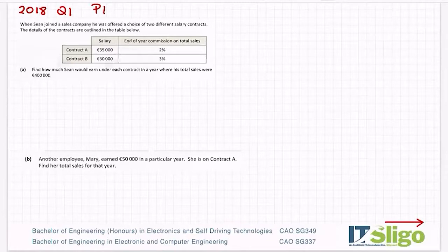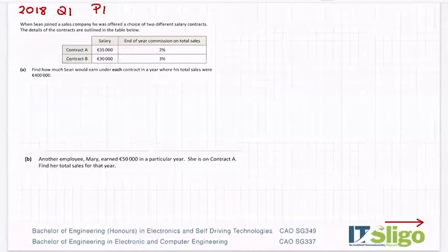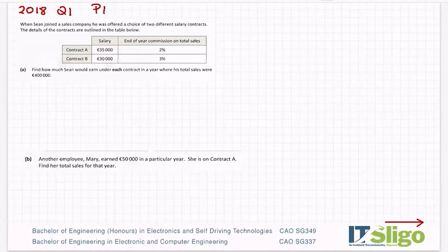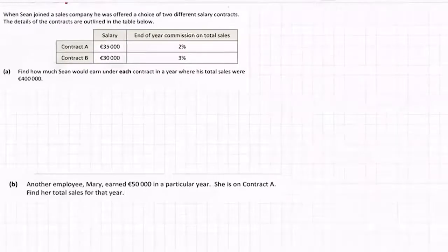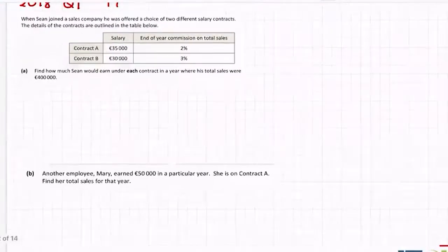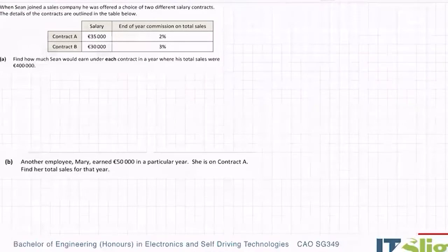The details of the contracts are outlined in the table below. Contract A gives him a guaranteed salary of 35,000 and commission of 2% on his sales. Contract B gives him 30,000 of his salary, but 3% on sales. So the question part A asked, find how much Sean earned under each contract in a year where his total sales were 400,000.